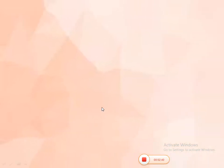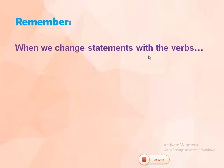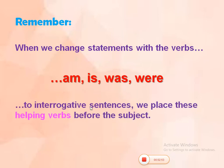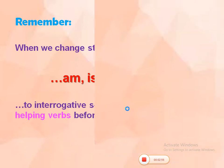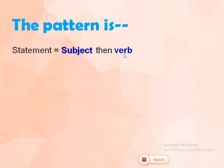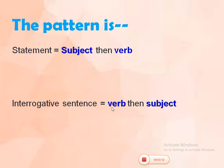Always remember: when we change statements with the verbs am, is, was, or were into interrogative sentences, we place these helping verbs before the subject. The pattern is: for statements, the subject comes first, then the verb. But for interrogative sentences, the verb comes first, then the subject.